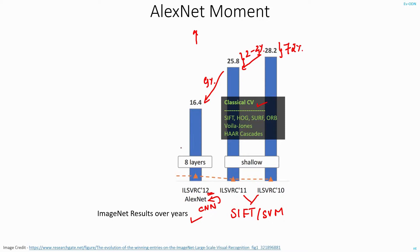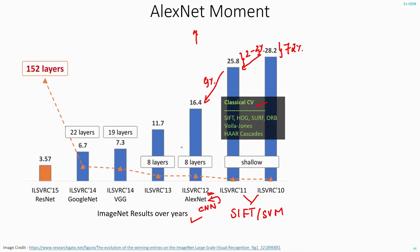In the subsequent years, most of the winning models were based on CNN architectures. We can see how the error rate kept falling and has now reached less than 5%. But all this improvement in the error rate came at a cost.